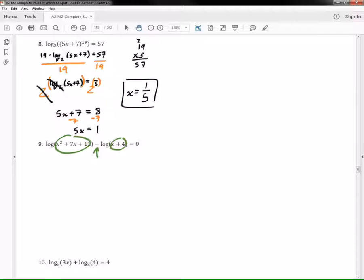Let's try that. All right, let's see. Log, and then we have x squared plus 7x plus 12, divided by x plus 4, and that equals 0.